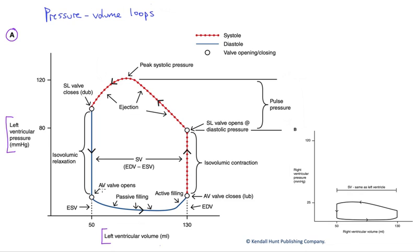So let's jump in here. Right here, the AV valve would open. The AV valve opens when ventricular pressure falls lower than atrial pressure. As soon as that occurs, the AV valve opens and we would begin to passively fill the ventricle.